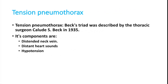Signs of tension pneumothorax: during every breath air is sucked into the pleural cavity, which expands, collapses the lung, and reduces cardiac contractility. The patient develops hypotension and shock. This is called Beck's triad: distended neck veins (elevated JVP), distant heart sounds due to air covering the heart, and hypotension as the left ventricle fails to receive enough blood. Urgent treatment is required.